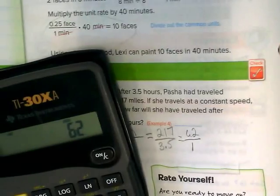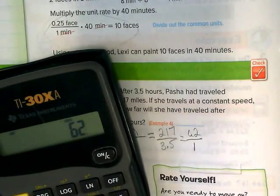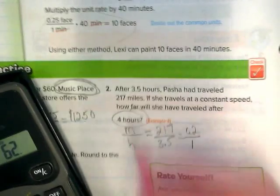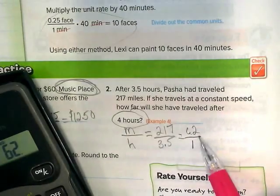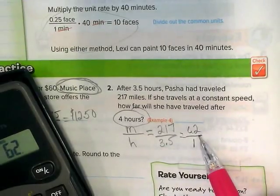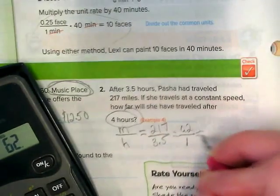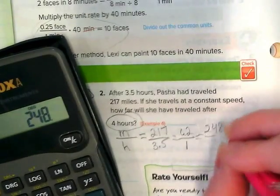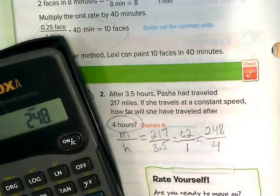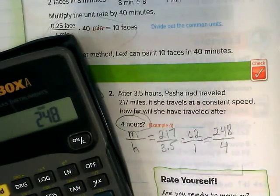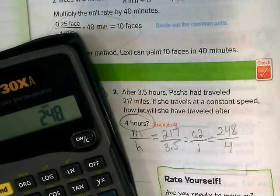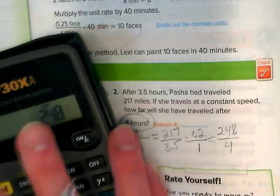217 divided by 3.5 gets us 62. This is really a series of equivalent fractions because the question wanted us to say how far she can travel in four hours. So now that we know for every hour it's 62, we just have to multiply that 62 times what? Four. 62 times 4 is 248 in four hours. Thumbs up if this is making sense because you're going to be doing problems like this in a moment on your own.